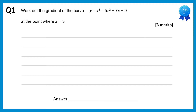For this first question we're going to differentiate, so we'll do dy/dx. If you differentiate x cubed you'll get 3x squared, differentiate minus 5x squared you get minus 10x, differentiate 7x you get plus 7, and the constant will differentiate to give 0.